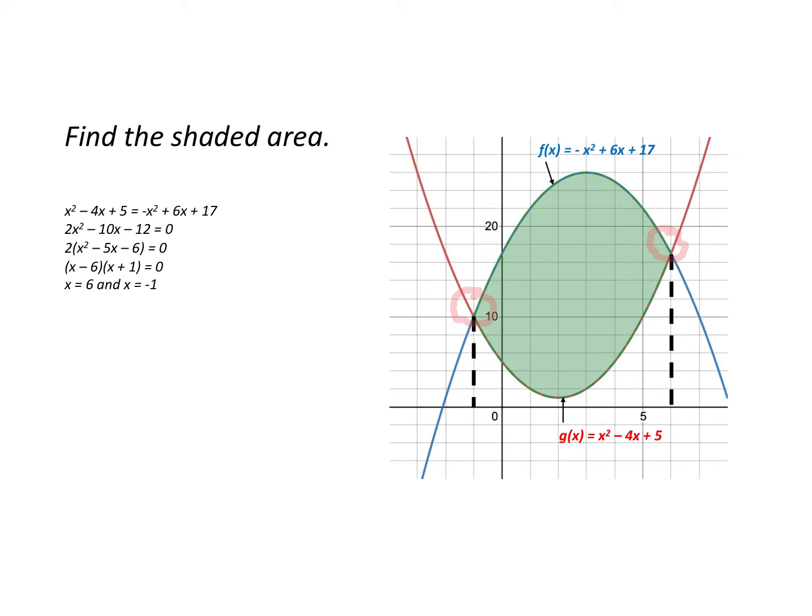And if we do that, we find that the points of intersection are x equals minus 1, which is right here, and x equals plus 6, which is right here. So now we know the points of intersection of the two curves and we can proceed to find the area.